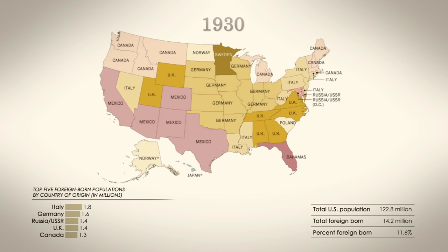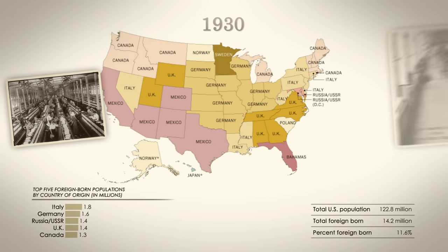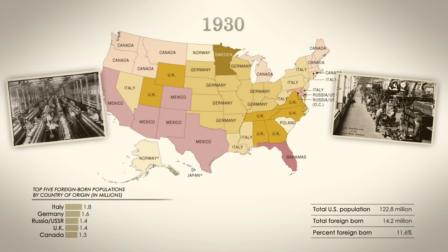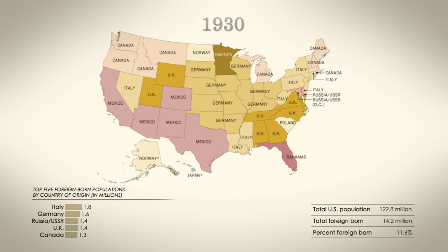By 1930, the Industrial Revolution was in full swing and the country was growing rapidly from within, so the percentage of foreign-born fell. And for the first time since 1850, Mexico was the dominant country of origin for new arrivals to California.